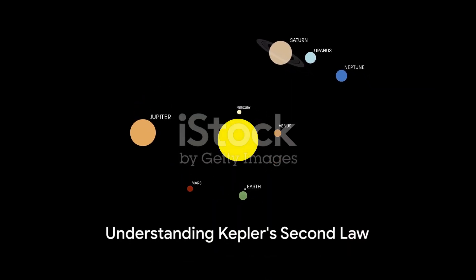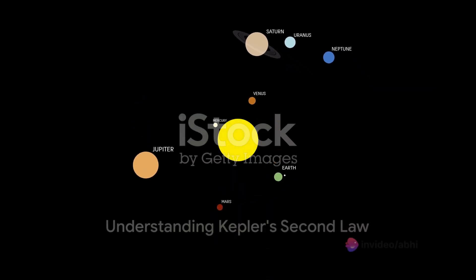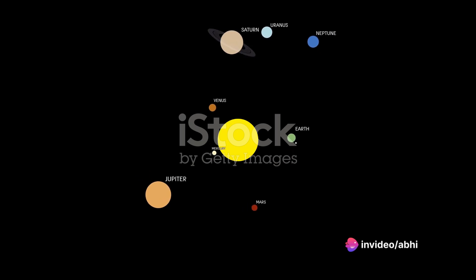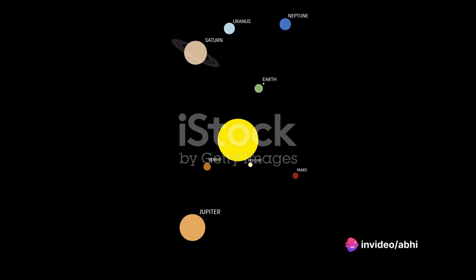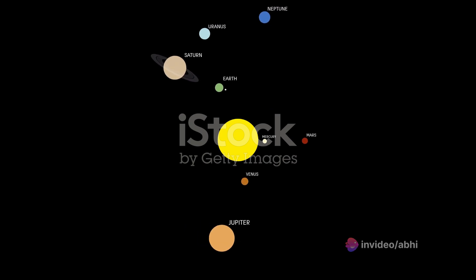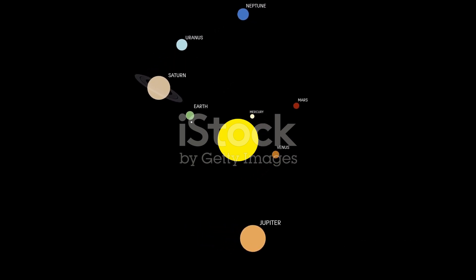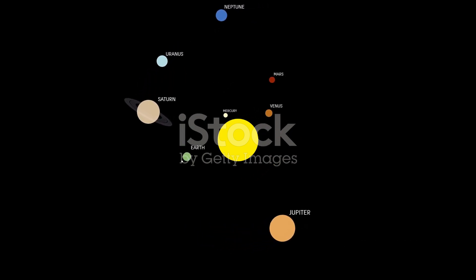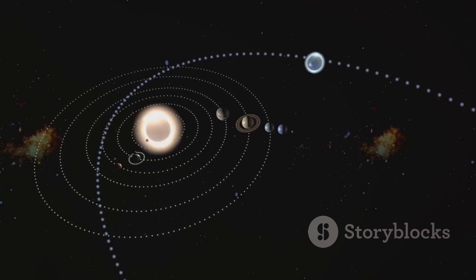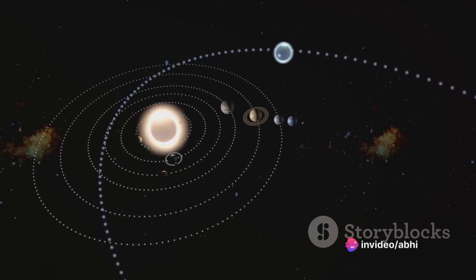Visualize a celestial body circumnavigating the Sun, not in an ideal circle, but along an elliptical path. This isn't your average celestial body, but a lush planet teeming with diverse lifeforms, remarkable landscapes, expansive oceans, dense forests, and sprawling mountains and valleys.